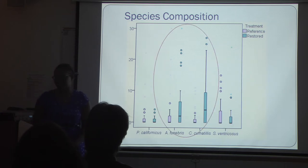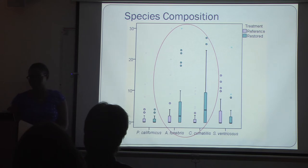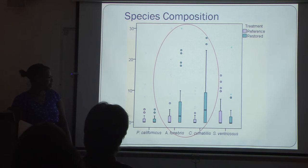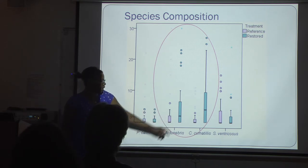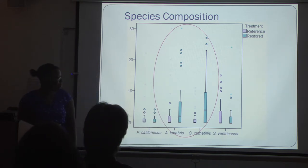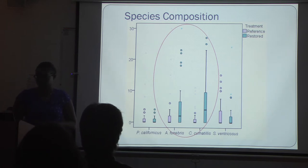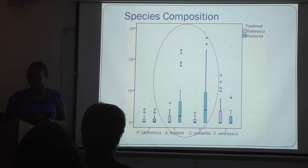P. californicus and C. californicus did have different means of the beetle species between restored and reference sites. You can see that the mean is greater in the restored than the reference sites for both species. A. funiburus and C. californicus were more abundant in most cases in the restored sites, and the means of the two species were higher in the restored site.